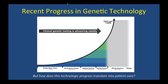There has been dramatic recent progress in genetic technology. Clinical genetic testing is advancing very rapidly. Just a few years ago, testing just BRCA1 and BRCA2 cost about $4,000. Now costs have gone way down, with sequencing the whole human genome for $1,000 starting to look realistic. Many more patients are being tested for more genes, though questions remain about how all this new genetic testing translates into better patient care.